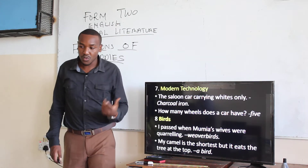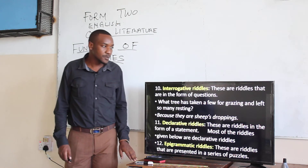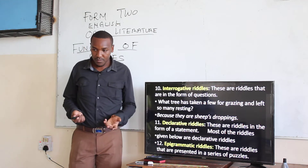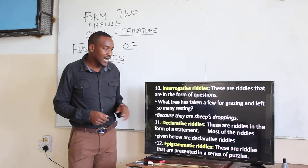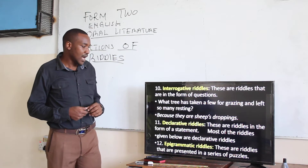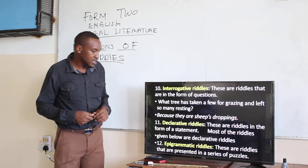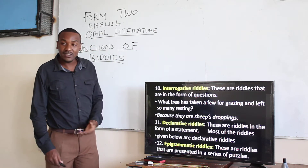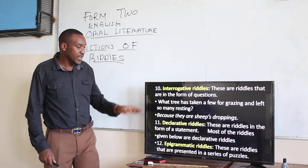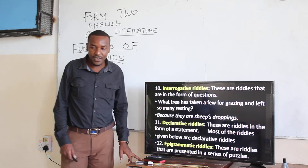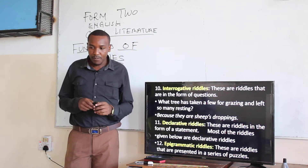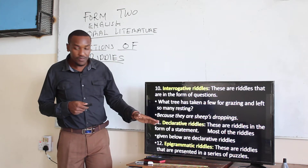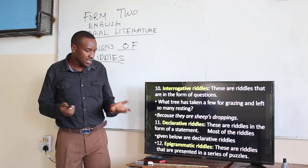Then we have riddles that ask questions — they are called interrogative riddles. These are riddles in the form of a question. Example: 'Why have they taken a few for grazing and left so many resting?' — it's a question that requires a response. Then we have declarative riddles, which are riddles in the form of a statement. Most riddles are declarative — they declare how things are.